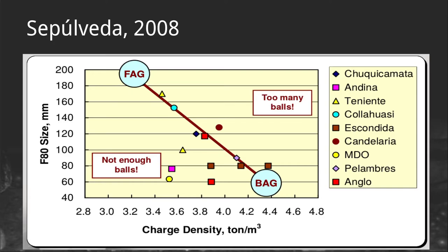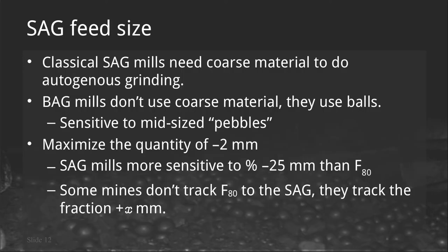An optimal feed size of 80–60 mm for BAG milling will probably require secondary crushing of the feed before it goes into the tumbling mill. SAG mills classically need coarse material to do the autogenous part of semi-autogenous grinding. BAG mills can't use coarse material — they use balls — so you don't want to be putting coarse material into the mill. BAG mills can be sensitive to mid-sized pebbles and you can expect a high pebble load. Operators don't necessarily track the F80 going into a BAG mill.